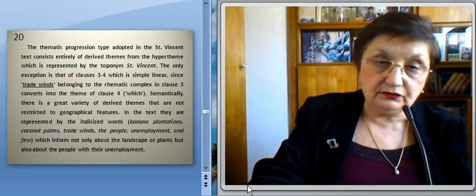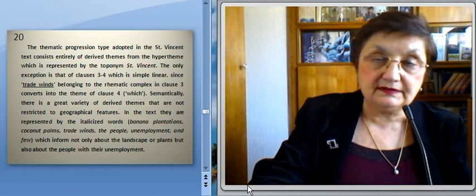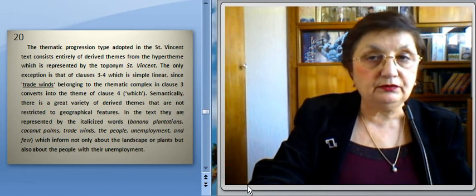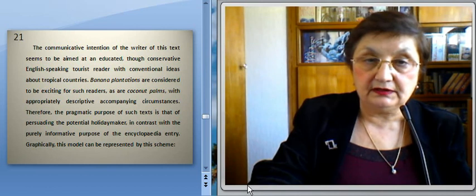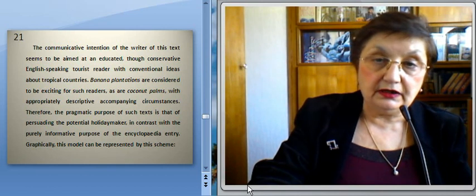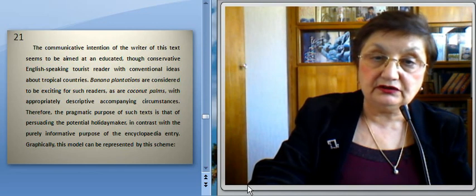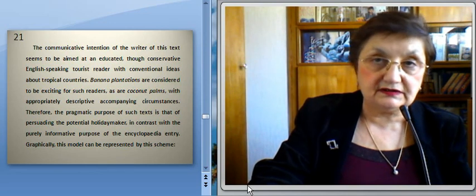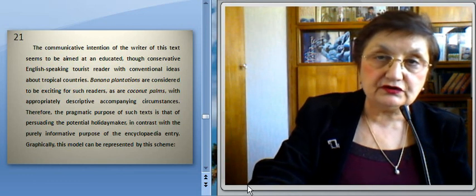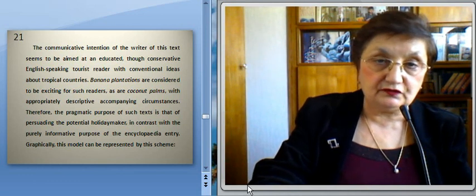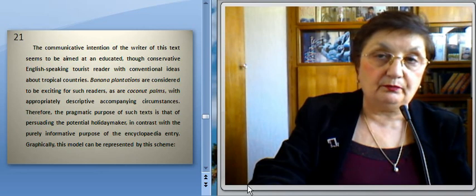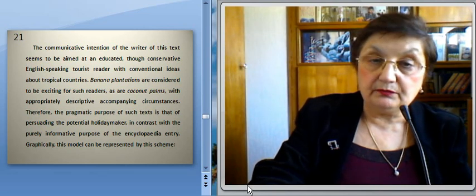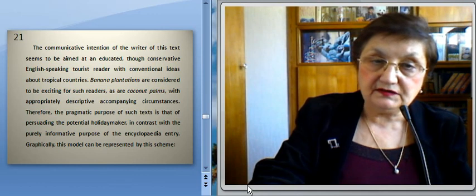The communicative intention of the writer of this text seems to be aimed at an educated, though conservative, English-speaking tourist reader with conventional ideas about tropical countries. Banana plantations are considered exciting for such readers, as are coconut palms with appropriately descriptive accompanying circumstances. Therefore, the pragmatic purpose of such texts is that of persuading the potential holiday-maker, in contrast with the purely informative purpose of the encyclopedia entry. Graphically, this model can be represented by this scheme.